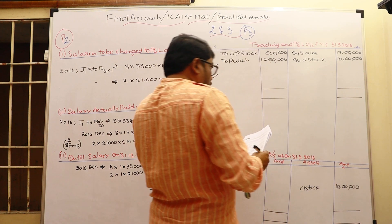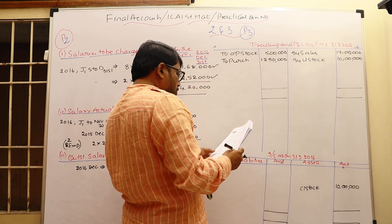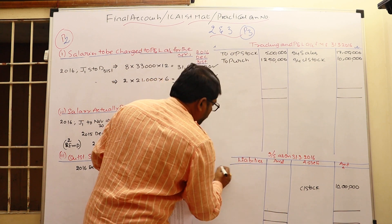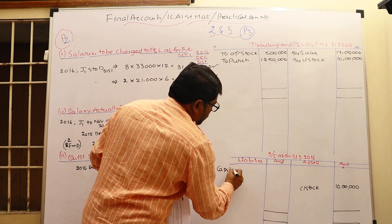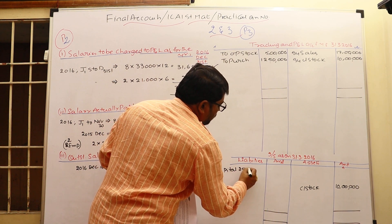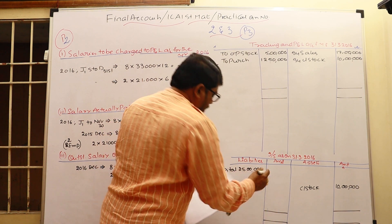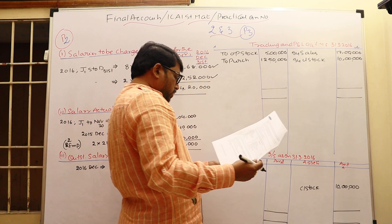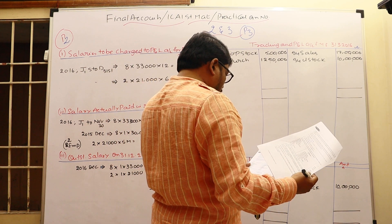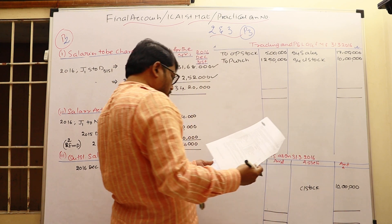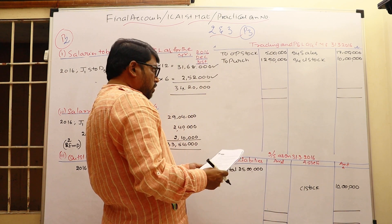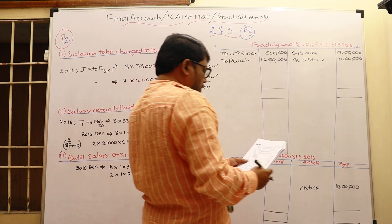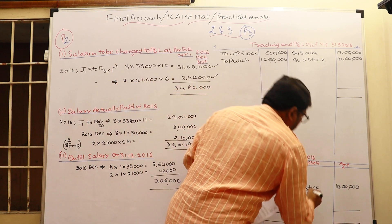Closing stock ₹10 lakhs is also shown as a current asset in the balance sheet. At the top of liabilities, take capital which is ₹25 lakhs. There are no drawings, so we directly work out the net profit and add it to capital. First, trade receivable as a current asset: ₹3,50,000.